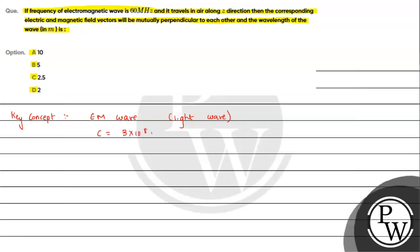Which is 3 into 10 raised to 8 meters per second, a standard value that we all know. Now we are interested in calculating the value of wavelength. The relation c equals nu lambda, we can write lambda will be c by nu.